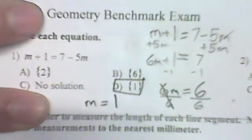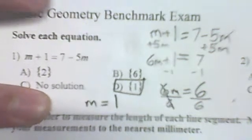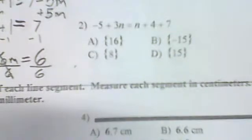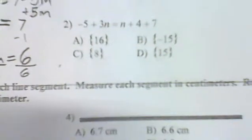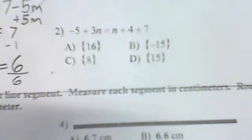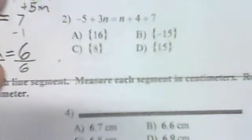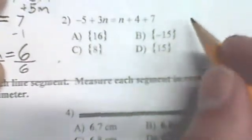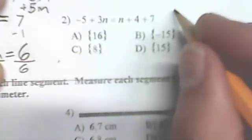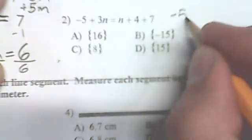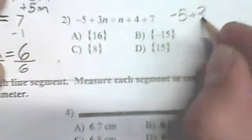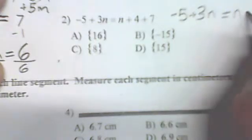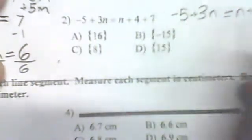So we would go to answer D and pick that. The next problem looks a little longer but it's not so different. Let's rewrite the equation: negative 5 plus 3n equals n.